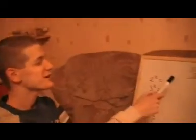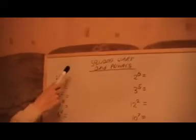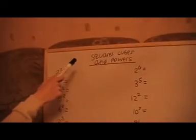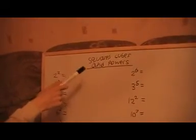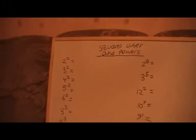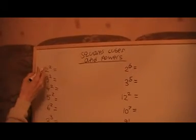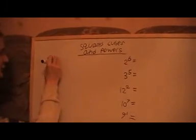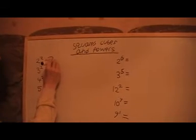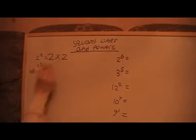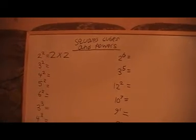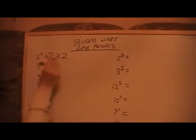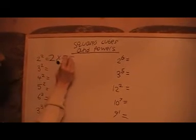In this video I want to talk about squares, cubes and powers. So if I want to square a number, that means we're multiplying the number by itself. So if I've got 2 squared, that means I've got 2 times 2, which is 4.